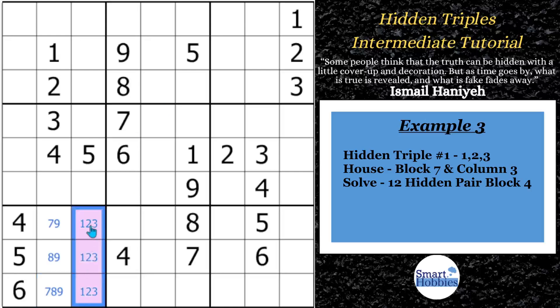And what this hidden triple does is this is called a locked triple. It's locked candidates because it not only satisfies the 1, 2, and 3 in block 7, but also they're in the same column. So whenever candidates take up two different houses, that's called locked candidates. So in this case, it's a locked triple because it's in column 3 as well. And what this means is a 1, 2, and 3 cannot be anywhere else along column 3. How this helps us out in this puzzle is you'll notice a 1, 2, and 3 can't be in these two cells.